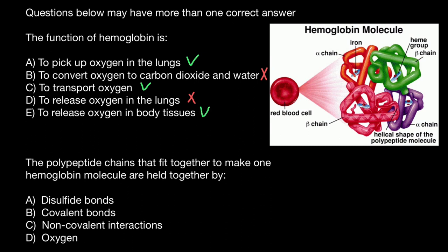So we can choose variant A, variant C, and variant E as correct statements. And next question, the polypeptide chains that fit together to make one hemoglobin molecule are held together by, and here's the variants of the answers.